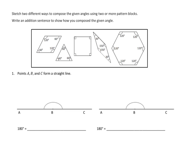Let's take a look at Problem Number 1. Problem Number 1 asks us to sketch two different ways to compose the given angles using two or more pattern blocks. Write an additional sentence to show how you compose the given angle. So, we were told in Number 1 that points A, B, and C form a straight line right here, A, B, and C, and that that's 180 degrees, which makes sense, right?